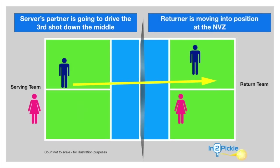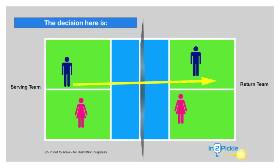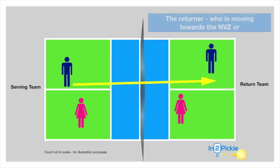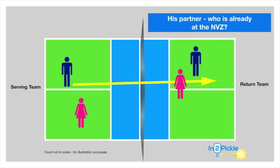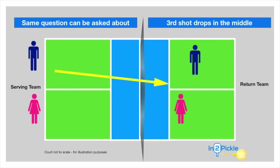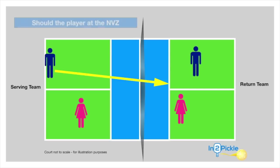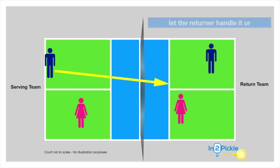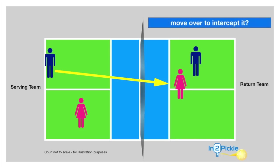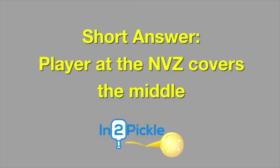The returner is moving up into position at the no-volley zone as the shot is being hit. The decision the return team has to make: should the drive be handled by the returner moving forward, or by the partner who's already at the no-volley zone, sliding over and intercepting the ball? The same applies to a third shot drop down the middle. Short answer: the player at the no-volley zone covers the middle on both shots.